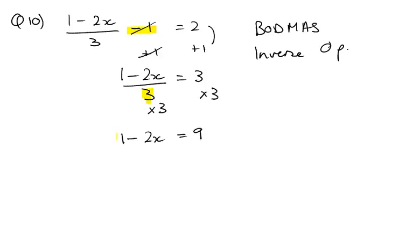Next number we need to get rid of is this 1 here. So we need to take away 1 from both sides because this 1 is a positive 1. The minus belongs to the 2, not to the 1. So we're left on this side, 1 take away 1 is 0, so it's just minus 2x on this side. 9 take away 1 is 8.